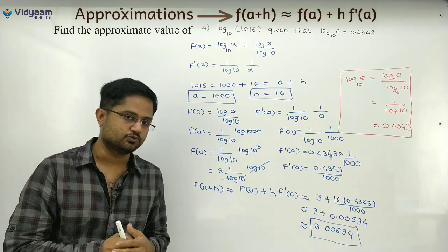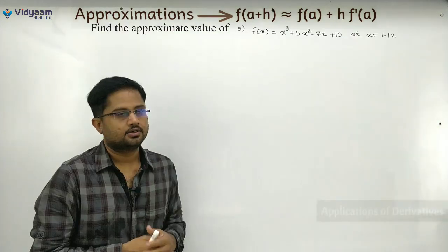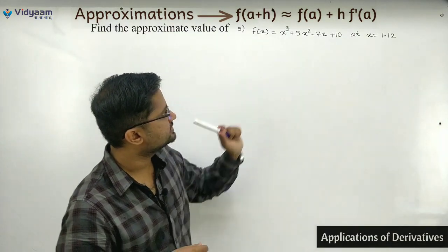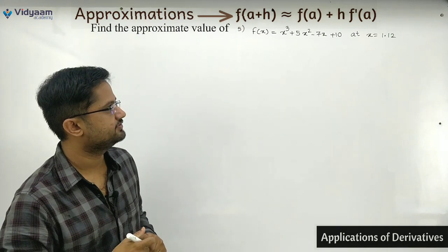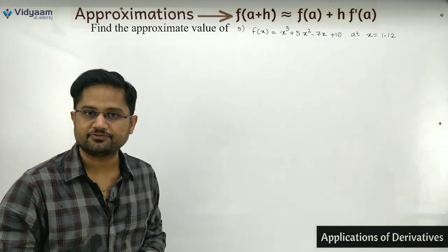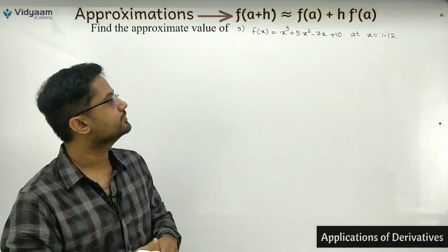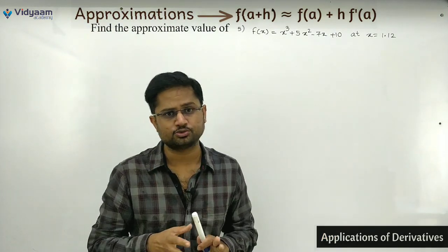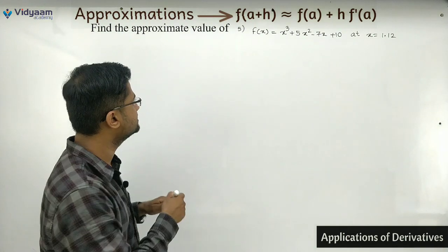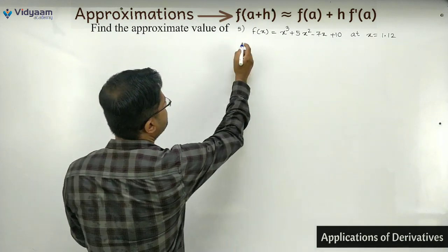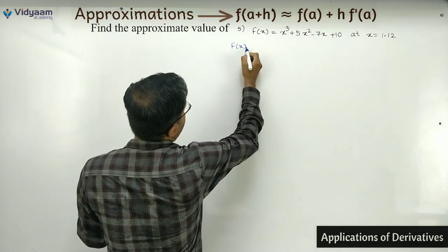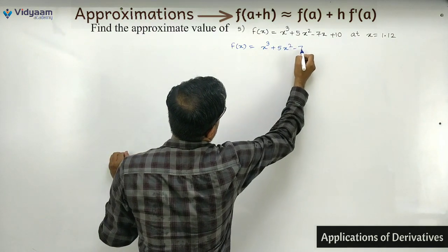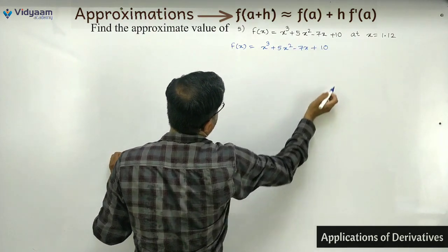Fifth sum: f(x) = x³ + 5x² − 7x + 10, find approximate value at x = 1.12. This is great — f(x) is directly given. So f(x) = x³ + 5x² − 7x + 10.